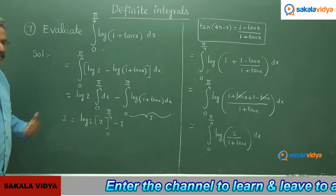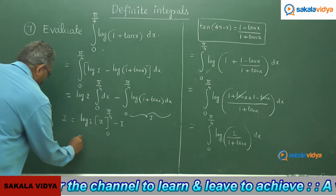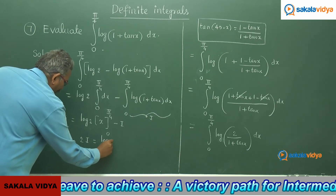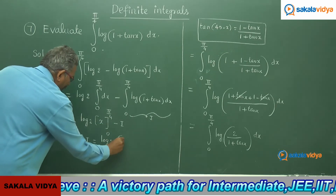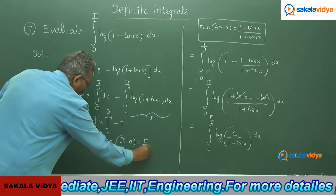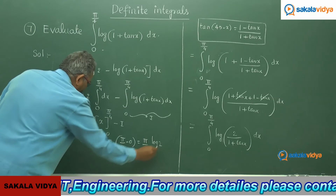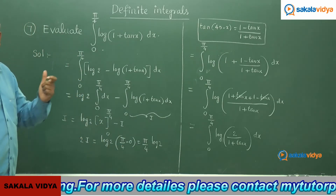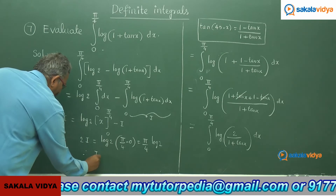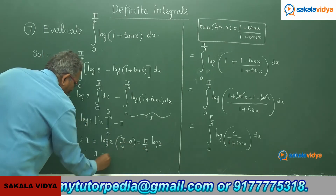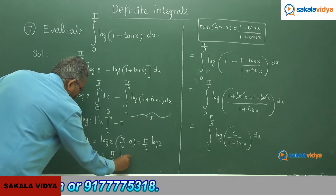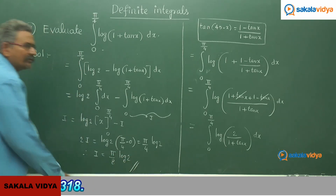Taking minus i to the left side, we get 2i equals log 2. Applying the limits: pi by 4 minus 0 gives pi by 4. So 2i equals (pi/4) log 2. Therefore, i equals pi/8 times log 2. This is the solution.